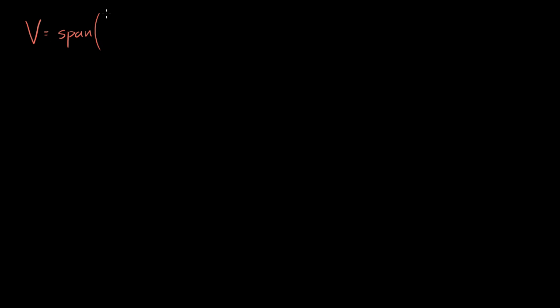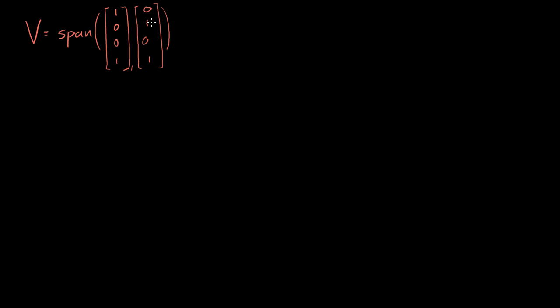Let's say I've got some subspace V, which tends to be our favorite letter for subspaces. It's equal to the span of two vectors in R4. The first vector is (1, 0, 0, 1) and the second vector is (0, 1, 0, 1). That is my subspace V. You can see that these vectors are linearly independent — this one has a 1 in the first entry, and there's no way to get that from the other. So they're linearly independent, and you could also call this a basis for V.